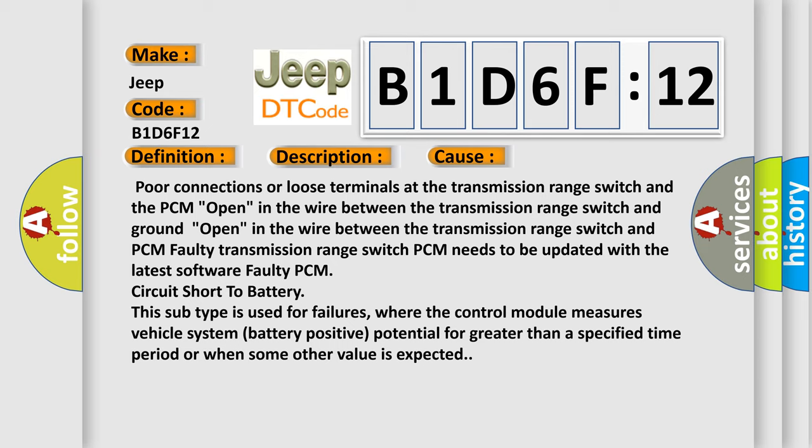Circuit short to battery. This subtype is used for failures where the control module measures vehicle system battery positive potential for greater than a specified time period or when some other value is expected. The Airbag Reset website aims to provide information in 52 languages.